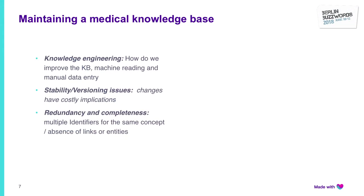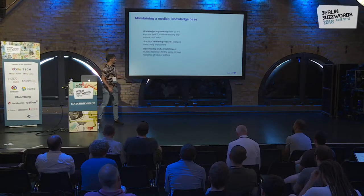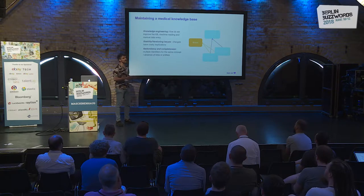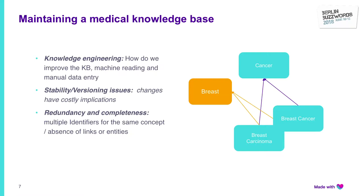Some of the challenges involved in maintaining a knowledge base: one is about knowledge engineering. We want to improve this knowledge base, so we need tools to parse natural language text, so we can go to sources like medical papers and ingest those. We also want tools so that doctors can review and add new entities. There are obviously issues with stability and versioning — imagine the chatbot has been using a certain ID for a while and then we decide to delete it; we need to consider what to do with obsolete data. There are also issues with redundancy and completeness. When you put multiple sources together, you might end up with two nodes that mean exactly the same thing. We have algorithms that suggest possible corrections — for example, breast carcinoma and breast cancer pointing to the same thing in the knowledge base.